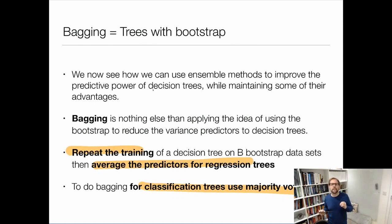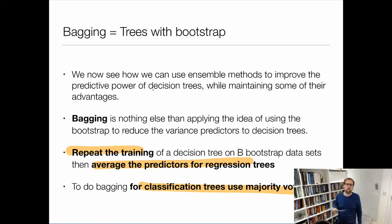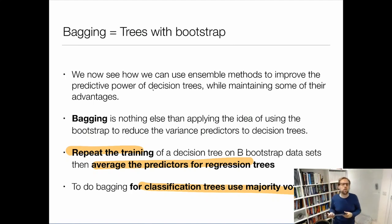This isn't what I would like, because to bring the variance down, ideally all the models would be independent — then I would get it down like 1 over square root n. But if they are dependent because the data is similar and they always tend to do the same thing, I can't bring the variance down as nicely.